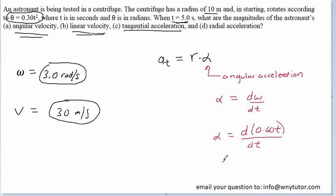And when we compute the derivative of the angular velocity of 0.60t with respect to time, we end up with just 0.60. And that unit would be in radians per second squared. So this is the value that we're going to be plugging in for alpha, the angular acceleration. And then, of course, we have the radius. So let's go ahead and calculate the tangential acceleration.